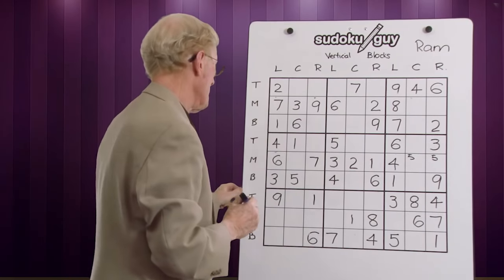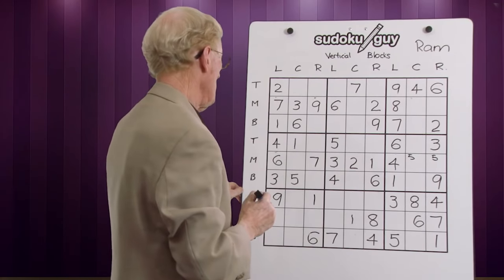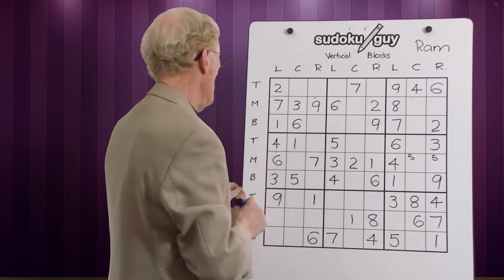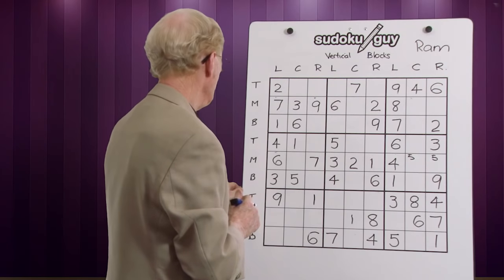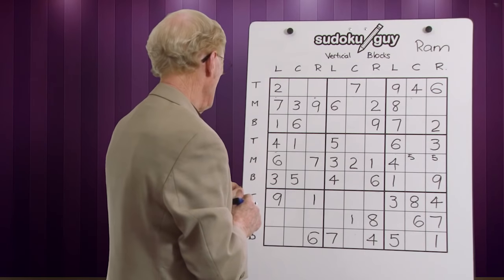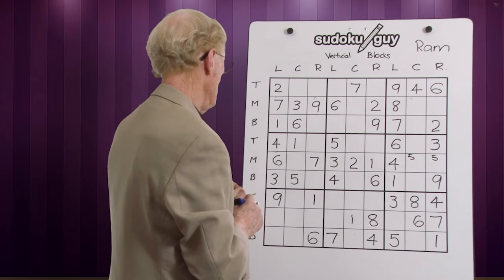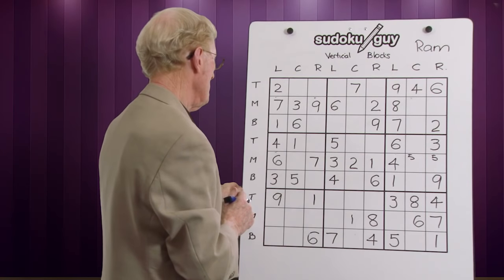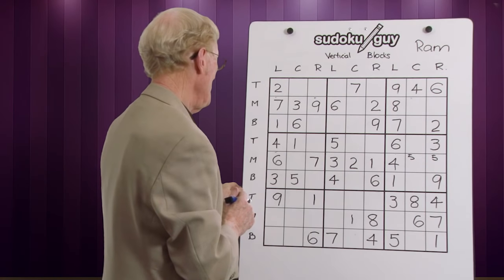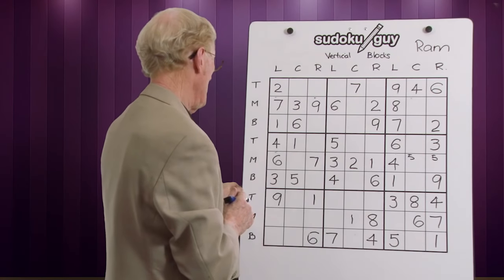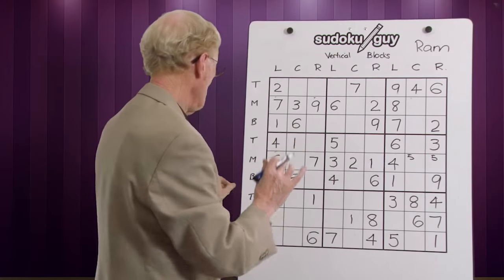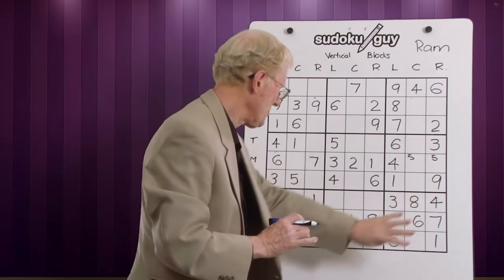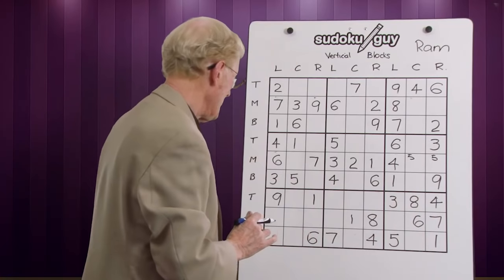Sevens - there's only one seven. Okay. Eight - I don't see any eights. Nines - there's only one nine. So we push down to these three horizontal blocks.